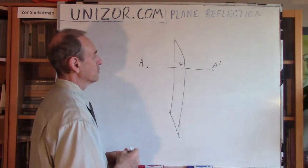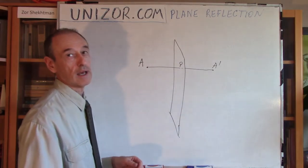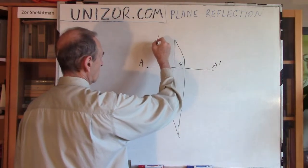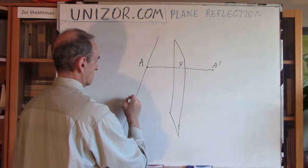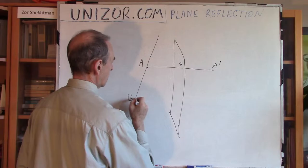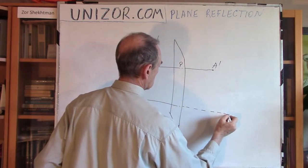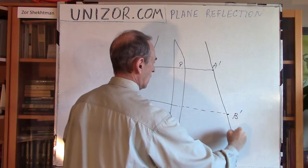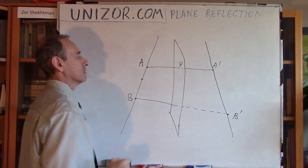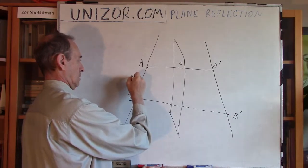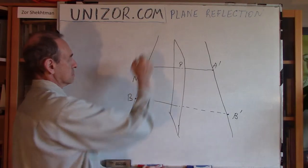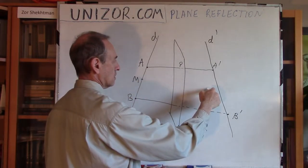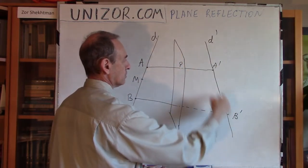My first theorem is to prove that the image of a line is a line. I will do exactly the same thing as I did for central symmetry. If I have some kind of a line, I will take two points A and B, take the image of both, connect the images, and now I'm stating that any other point on the original line — let's call it M, with image M prime — will find its reflection exactly on the line which connects A prime and B prime.